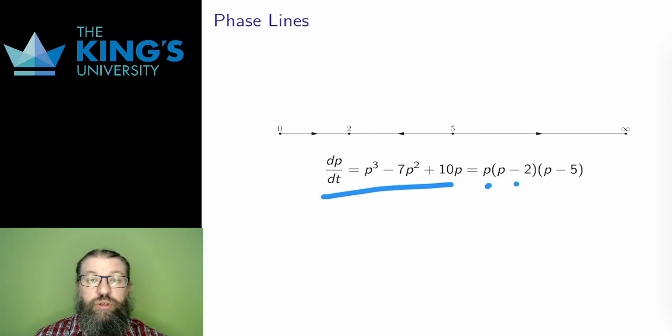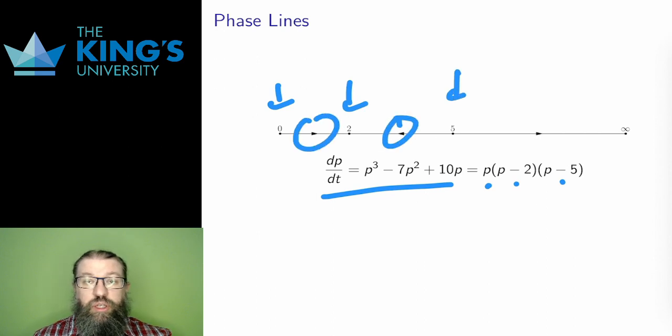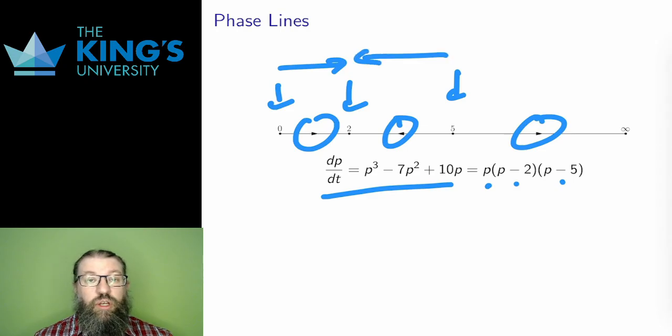Here's another example with zero, two, and five as steady states. If I test at P equals one, the cubic is positive. If I test at P equals three, the cubic is negative. And if I test at P equals six, the cubic is positive again. I draw the trajectory arrows to match. And again, the picture gives me an interpretation of the system. Starting below two in whatever units we're using, the population grows up to the steady state of two. Starting between two and five, the population decays back down to the steady state of two. And starting above five, the population grows without bound.